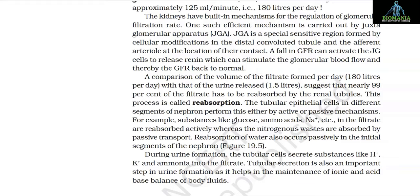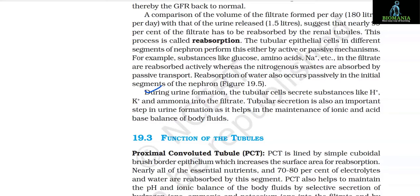A comparison of the volume of filtrate formed per day (180 liters) with that of urine released (1.5 liters) suggests that nearly 99 percent of the filtrate has to be reabsorbed by the renal tubules — this process is called reabsorption. Tubular epithelial cells perform this by active or passive mechanisms. Substances like glucose, amino acids, and sodium are reabsorbed actively, whereas nitrogenous waste are reabsorbed by passive transport. Reabsorption of water also occurs passively in the initial segments. During urine formation, tubular cells also secrete substances like hydrogen ions, potassium ions, and ammonia into the filtrate to maintain ionic and acid-base balance.